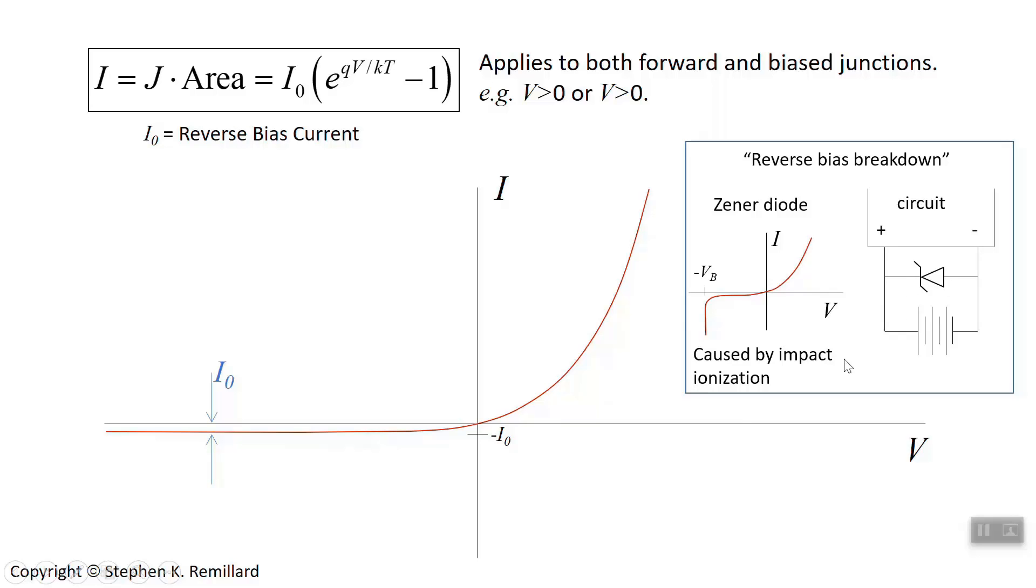We'll stop it with that. That's junctions. It was reverse bias current and forward bias current. And we're about ready, after one more example here, we're about ready to start optoelectronics next.